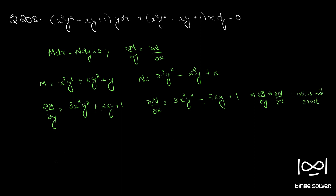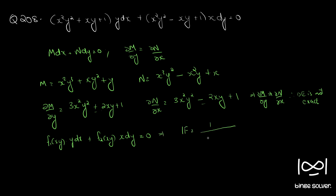Now we have to find the integrating factor to convert this into an exact equation. The given equation is in the format f₁(xy)·y dx + f₂(xy)·x dy = 0. For such questions the integrating factor is given by 1/(Mx − Ny).